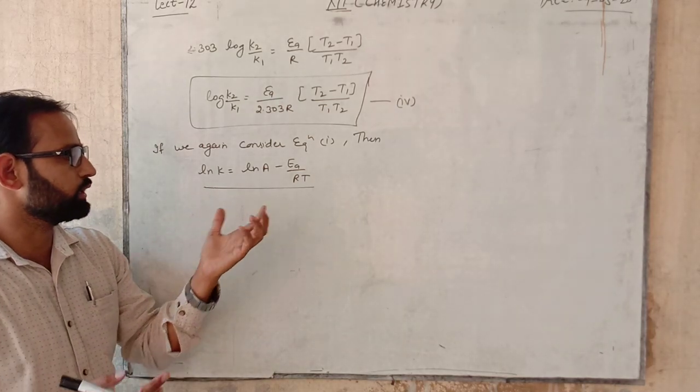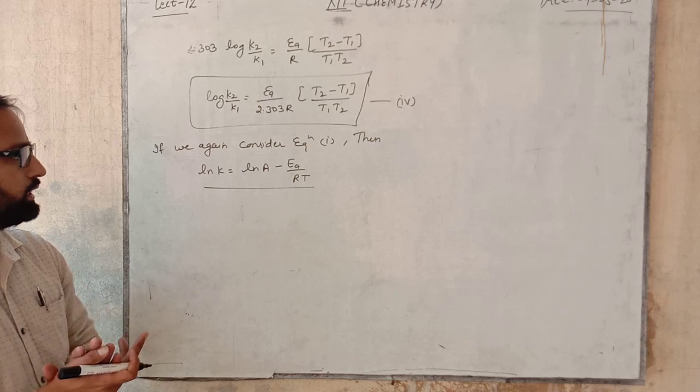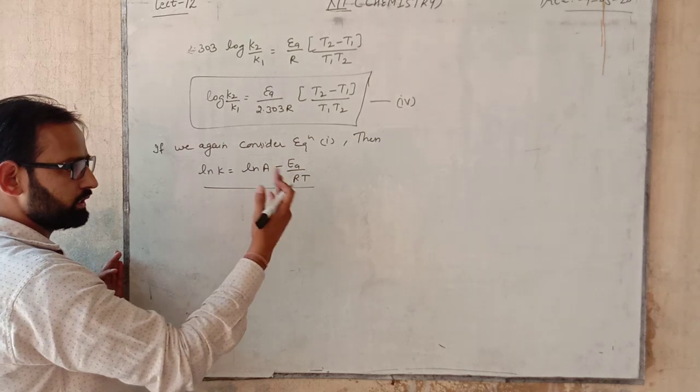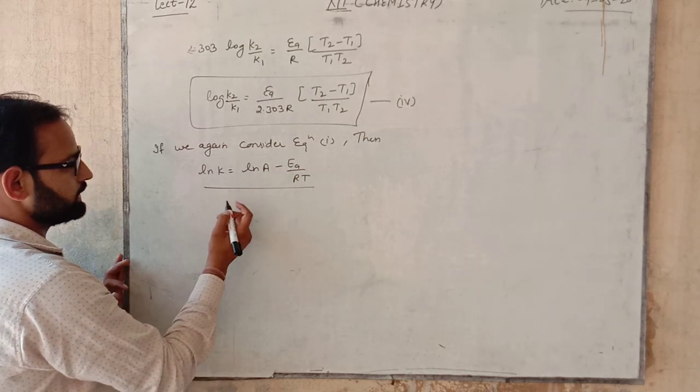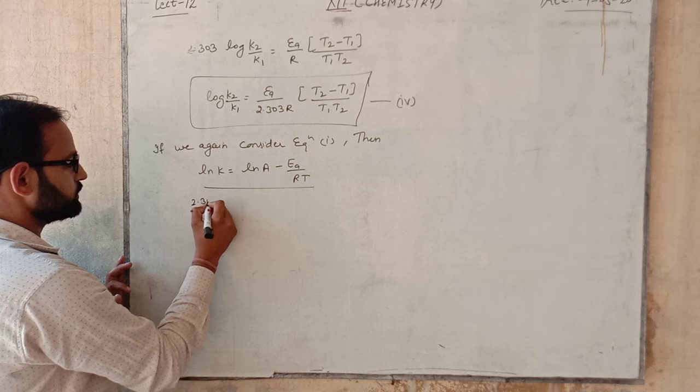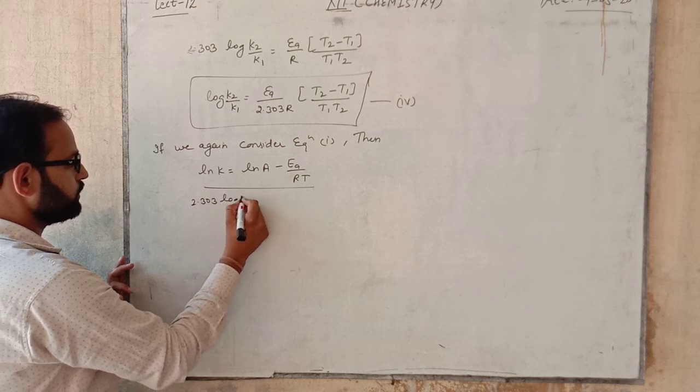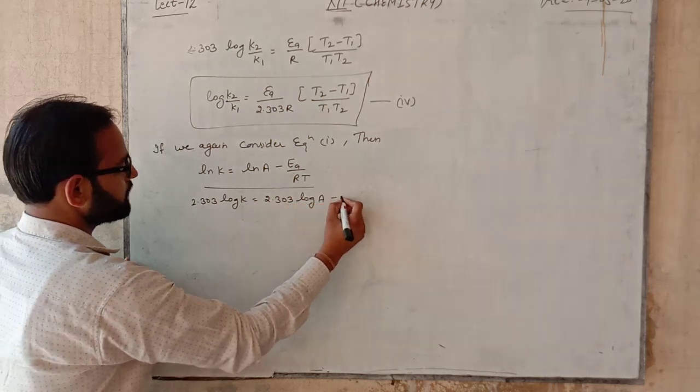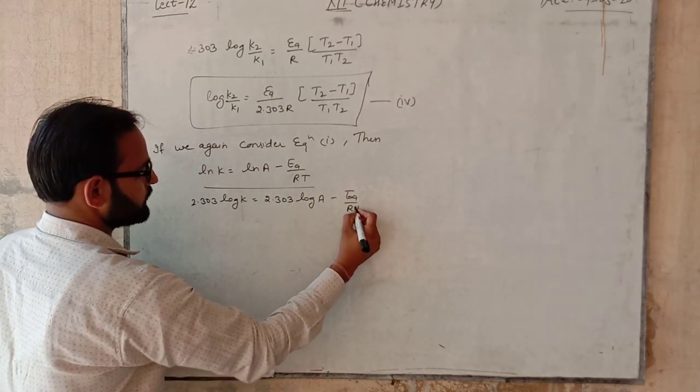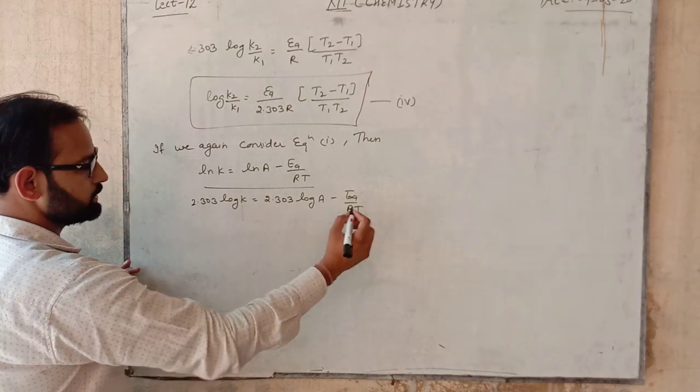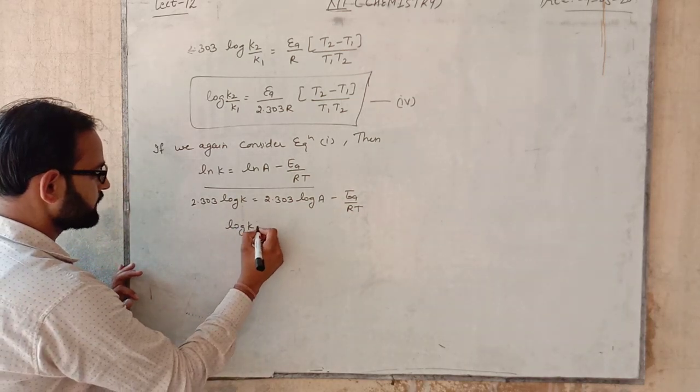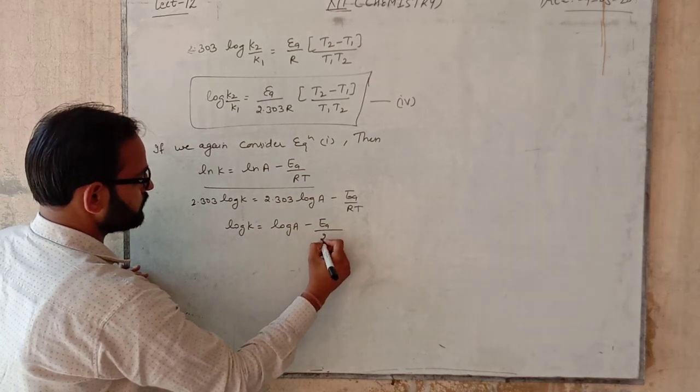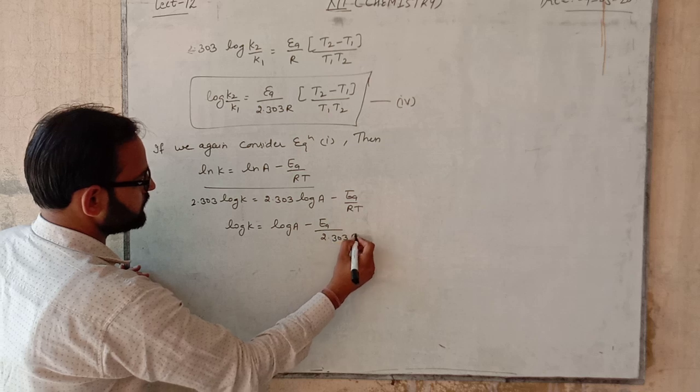We want to check the validity of Arrhenius equation by plotting graph. So this is what we can do in straight line equation: 2.303 log k is equal to log A minus Ea upon 2.303 R T.